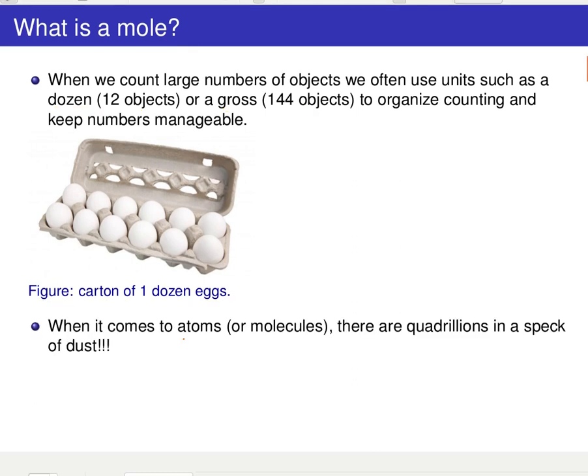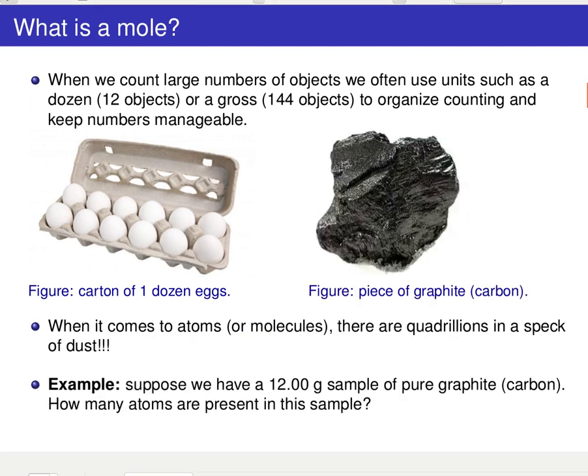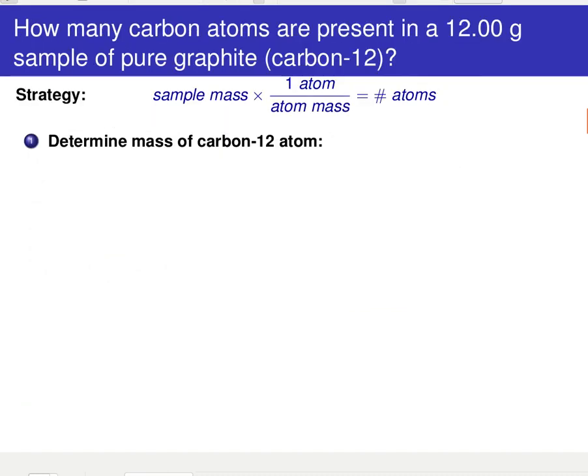Now, when it comes to atoms or molecules, it turns out that there are quadrillions of these little guys and even a little tiny microscopic speck of dust. So for example, if I take just a little piece of graphite here, say only 12 gram sample, just pure graphite, nothing but carbon atoms in there, we have some tools that we could figure out how many atoms are going to be present in this sample.